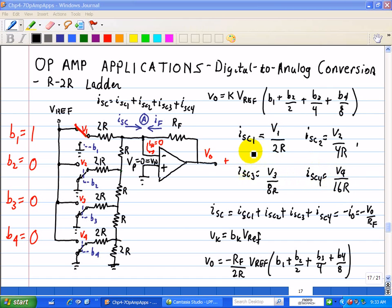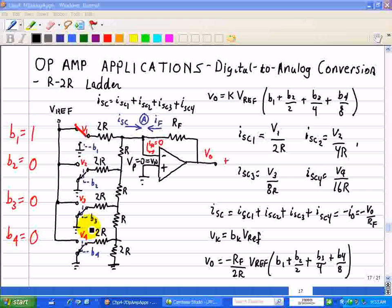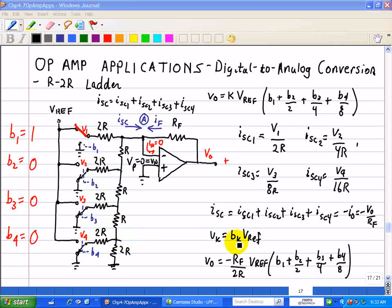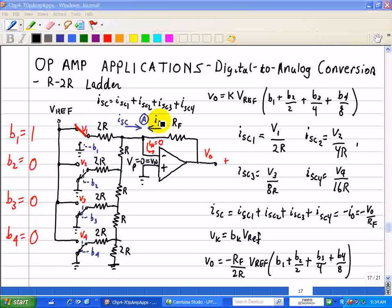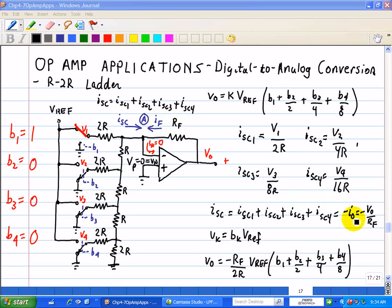Now, the total current from all these 4 inputs, this 4-bit DAC, is ISC1 plus ISC2 plus ISC3 plus ISC4, and that's equal to negative IO, since we applied the KCL at this virtual ground. So, ISC is equal to IO, I put IF here, but they're the same thing. That's equal to minus IO, which turns out to be the voltage across this feedback resistor. That's negative VO divided by RF.